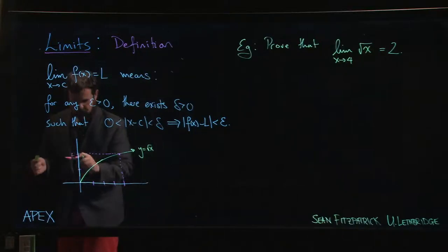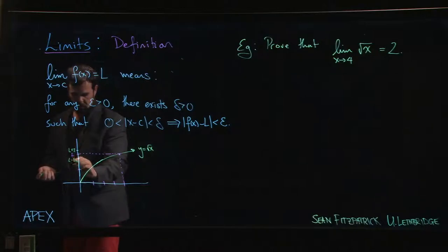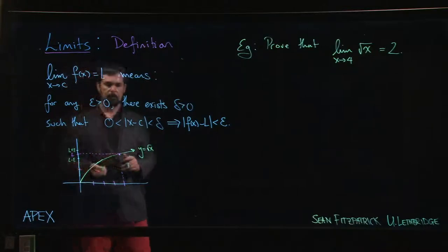This value here is L, and epsilon is giving you some range around L. You're going a distance of epsilon either side of L, so from L plus epsilon to L minus epsilon.